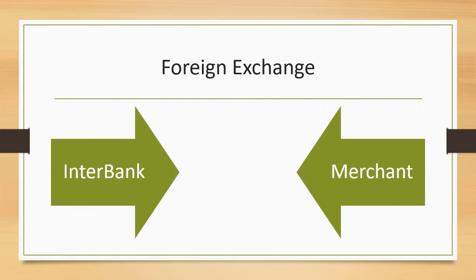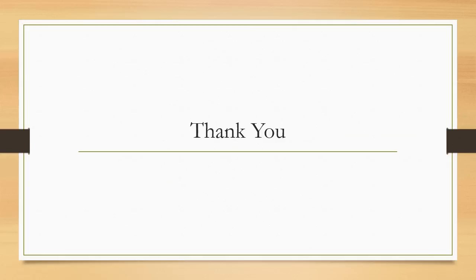The last segment is foreign exchange, where a separate desk handles interbank dealings and dealings with various types of merchants — the bank's customers who come to do various types of deals, whether long-term or spot deals. So the four segments to know are Treasury assets and liabilities, derivatives, and foreign exchange. These are the products a person working in Treasury would typically deal with. The idea behind this video is to explain what you should know if you want to be in Treasury, or if you are writing the certified Treasury professional exam. I hope this video was useful — please subscribe to my channel and like this video. Thank you.